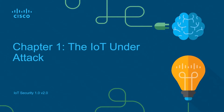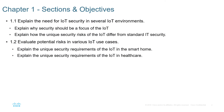This is Chapter 1 entitled 'The IoT Under Attack.' In this chapter, we'll explain the need for IoT security in several IoT environments. We'll explain why security should be a focus of the IoT, how the unique security risks of the IoT differ from standard security, and evaluate potential risks in various IoT use cases. We'll also explain the unique security requirements of the IoT in the smart home and in healthcare.